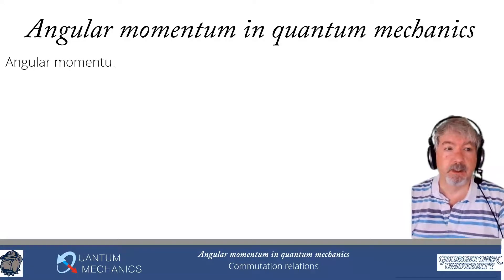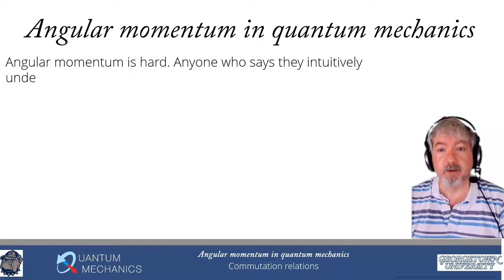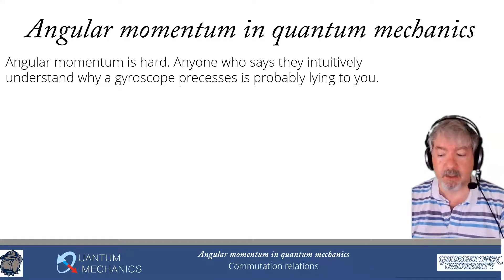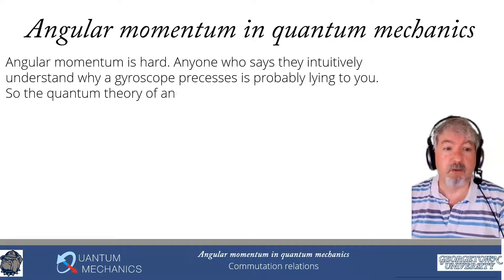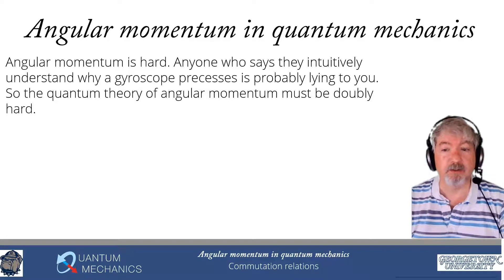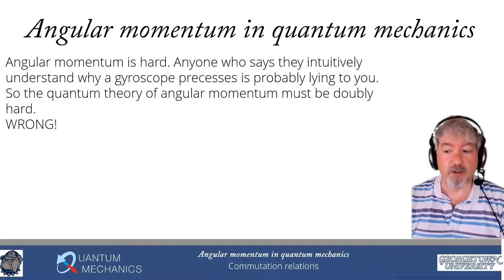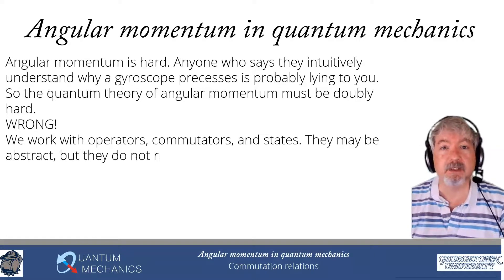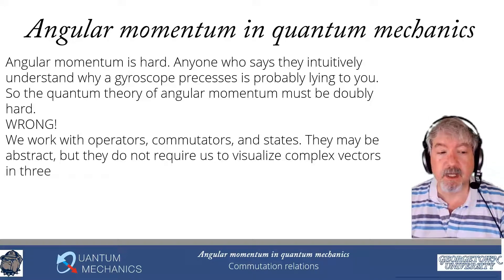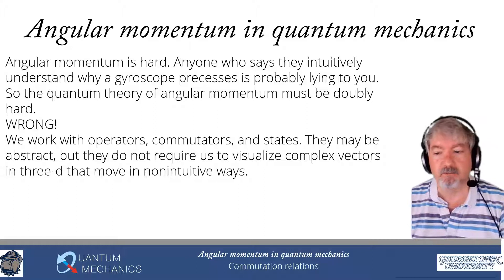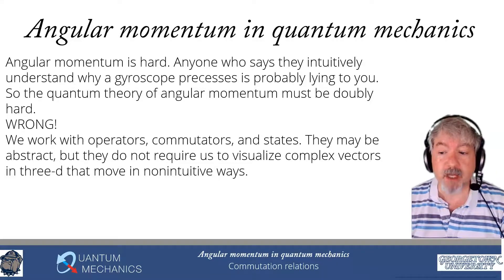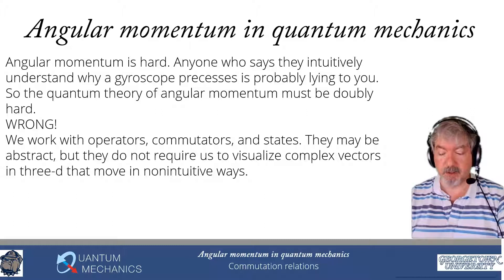So, angular momentum. As you probably recall from classical mechanics, angular momentum is hard — anyone who says they intuitively understand why a gyroscope precesses is probably lying to you. So the quantum theory of angular momentum must be doubly hard. Wrong. It turns out that in quantum mechanics, we work with operators, their commutators, and the states. While this procedure might be abstract, at no point do we have to visualize complex vectors in three dimensions moving in non-intuitive ways as in classical mechanics. As long as you can deal with the abstraction, angular momentum is actually simpler in quantum mechanics than in classical mechanics.